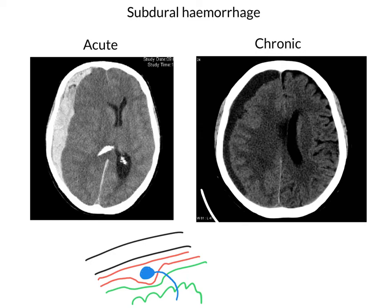Why is it the case that these hemorrhages remain in one half of the cranial cavity and don't tend to spread across to the other half? Well, that's down to the fact that we've got the falx. In the midline, we've got the falx cerebri that we can see here on our CT scans. What the falx does is it constrains the hematoma and prevents it from tracking to the contralateral side. The blood can't really cross over the falx because it acts as a physical barrier in the midline, keeping the blood in one half of the cranial cavity.